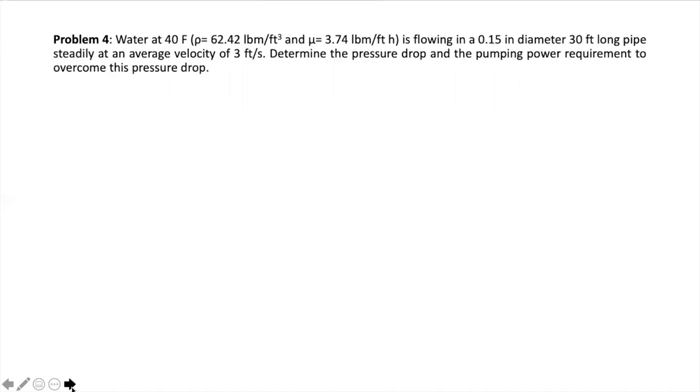Now, related to pumping power and pressure drop — these are two terms we reviewed for forced convection, which we also covered in fluid mechanics. We have water at 40°F with the density and viscosity given, flowing in a 0.15-inch diameter, 30-foot-long pipe steadily at an average velocity of 3 feet per second. Determine the pressure drop and the pumping power required to overcome this pressure drop.